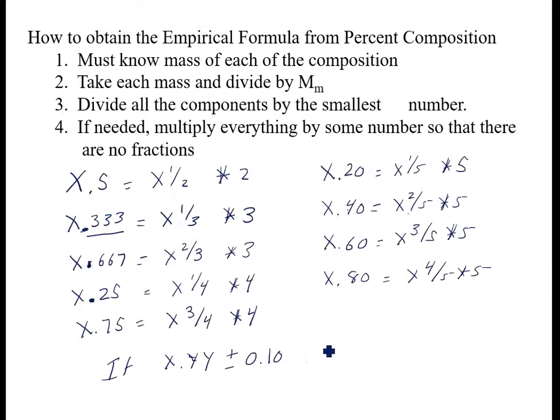If my x.yy is plus or minus 0.1, which means that if I had 3.91, or 4.09, round to that nearest whole number. For this one would be 4. So basically, this plus or minus 0.1, this is actually 0.09, but basically, if it's between 0.9 and 0.1, then I round to the nearest whole number.